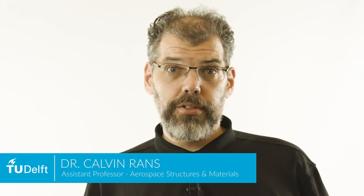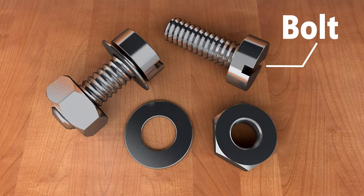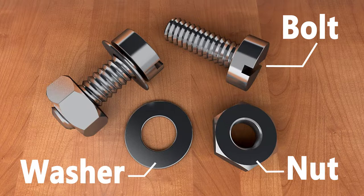When we talk about threaded fasteners, what we are actually referring to is an assembly of parts that work together. These parts are the bolt, the nut, and in some cases, a set of washers.